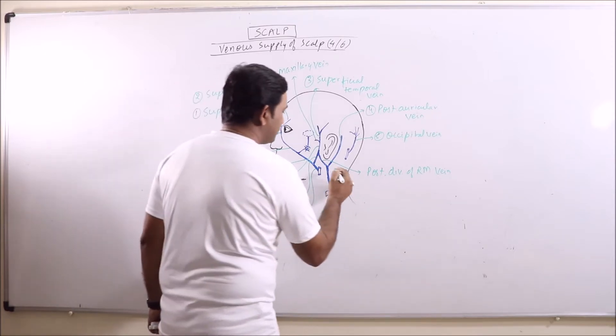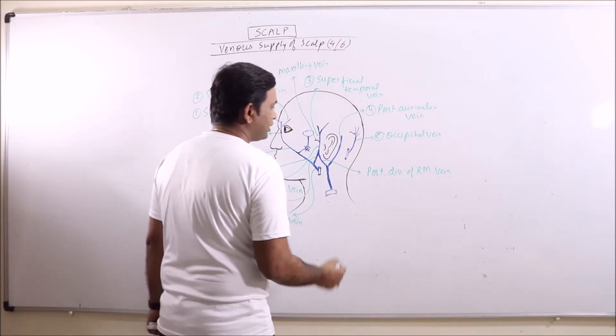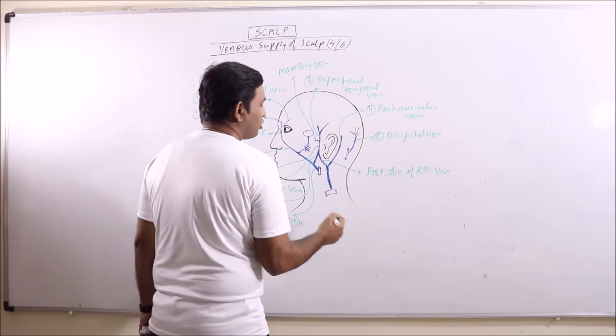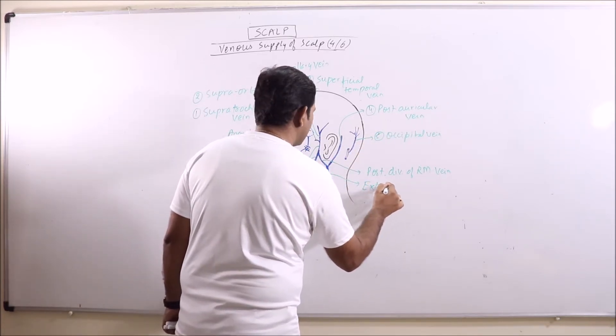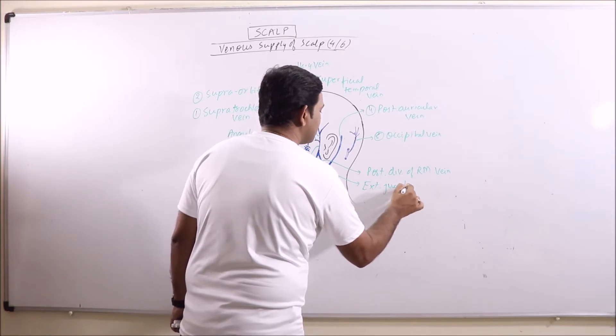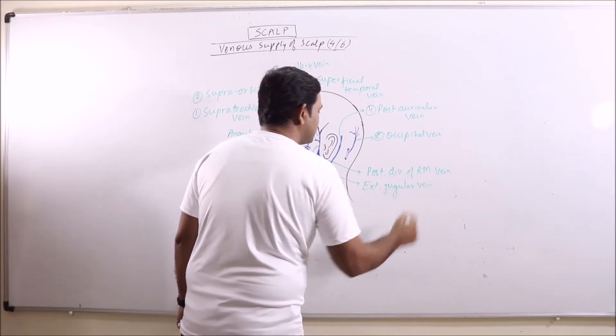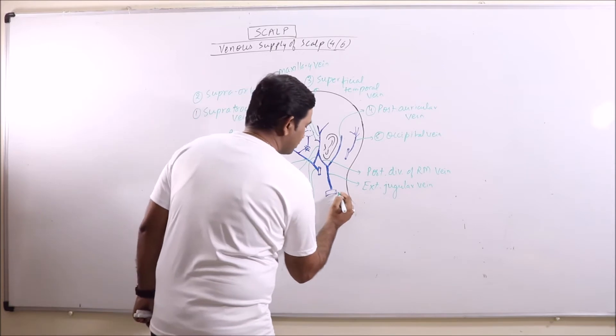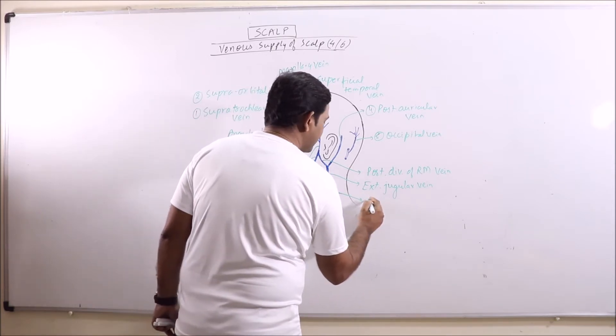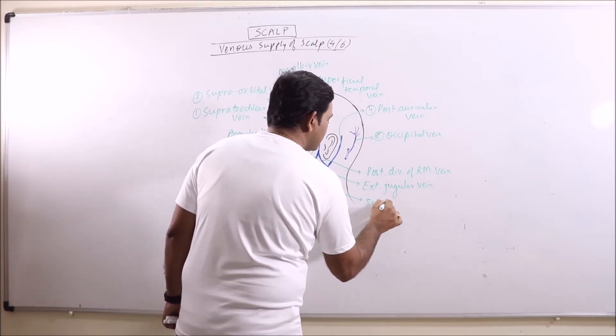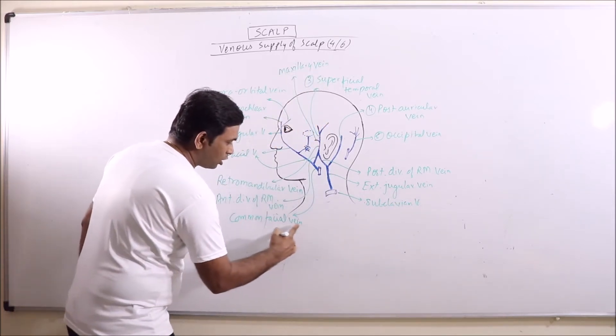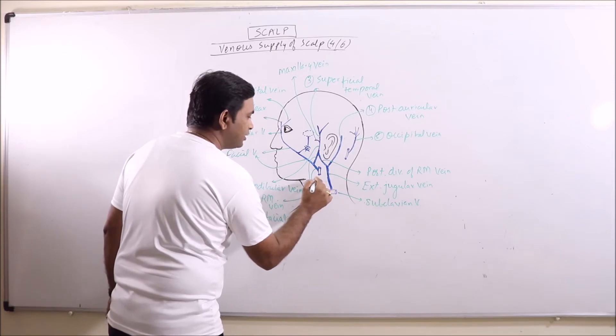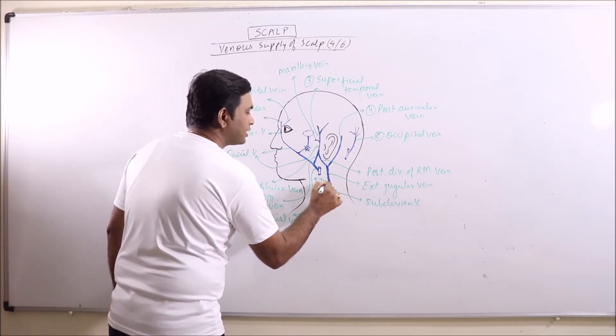While the posterior division of retro-mandibular vein combines with posterior auricular vein and becomes external jugular vein. External jugular vein drains into subclavian vein. While the common facial vein drains into internal jugular vein.